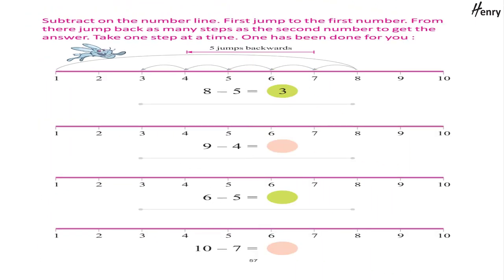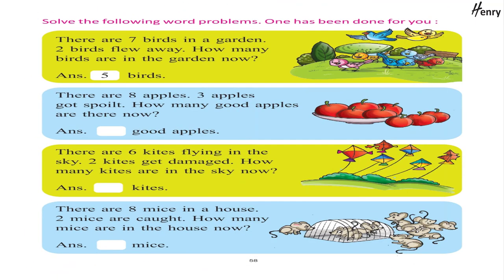Subtract on the number line: first jump to the first number, then jump back as many steps as the second number to get the answer. Take one step at a time; one has been done for you. Solve the following word problem; one has been done for you.